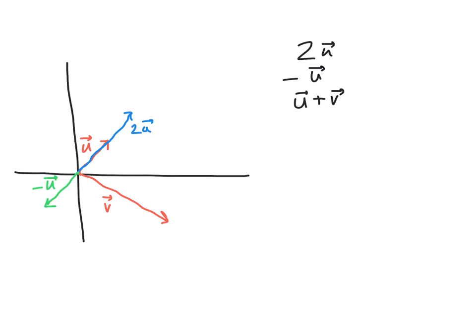Lastly, u plus v: we first follow vector u from the origin to its terminal point (arrowhead). Then from that point we follow vector v — going in the direction v points for the length of v. Remember, v can be located at any point and still indicates the same direction and magnitude. The resulting vector from the origin to that endpoint, drawn in yellow, is u plus v.